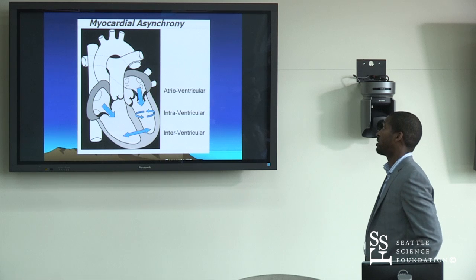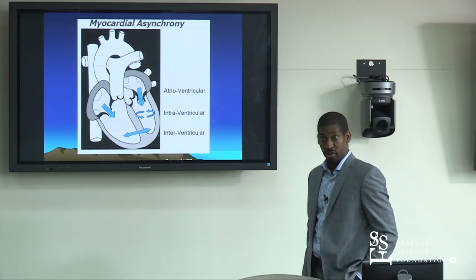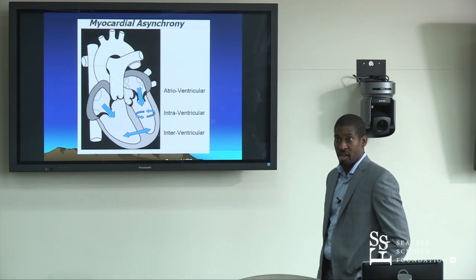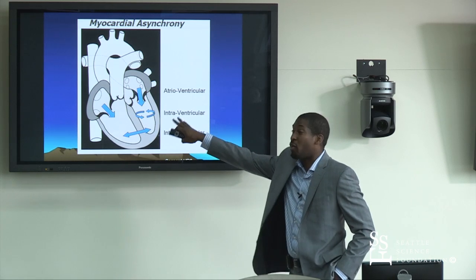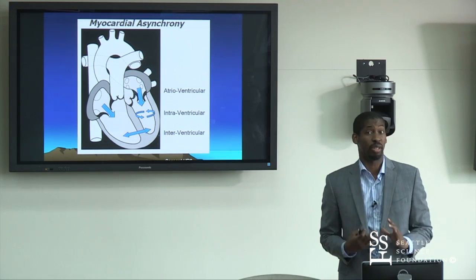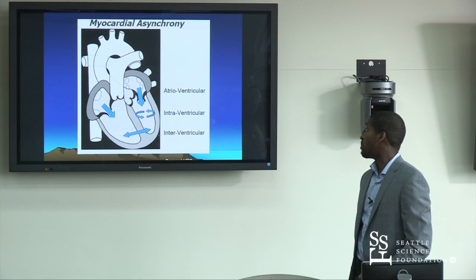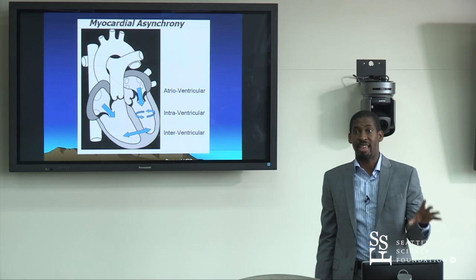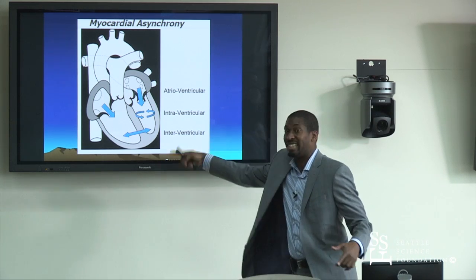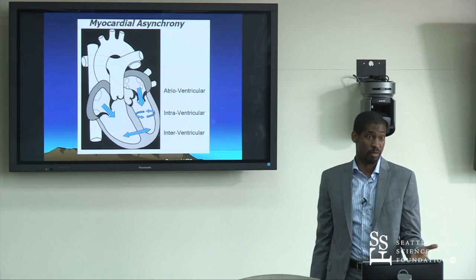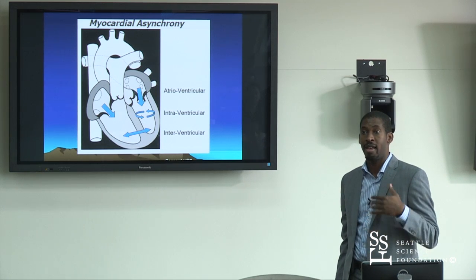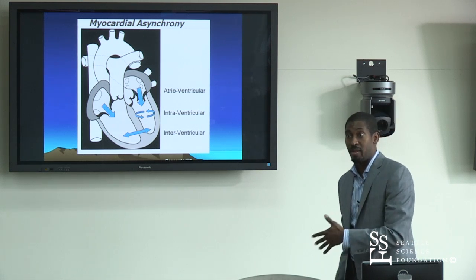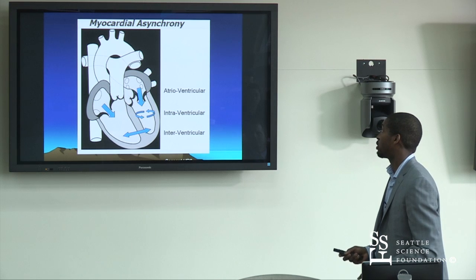When talking about dyssynchrony, there's atrioventricular synchrony between atrium and ventricles, LV-RV dyssynchrony, and dyssynchrony within the LV itself — all interrelated. Probably the most powerful parameter we can control is AV synchrony. By adjusting AV timing appropriately, you can fix a lot of the dyssynchrony. That's really been the focus of device company algorithms — optimizing that AV interval to provide the best overall global synchronous contraction.